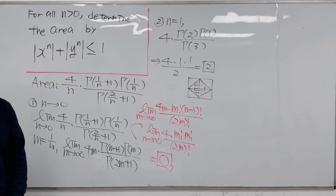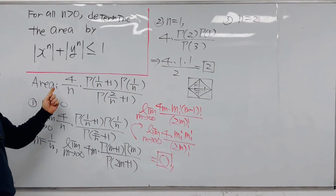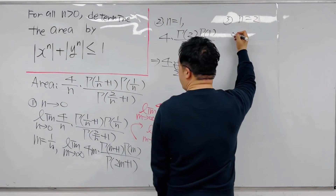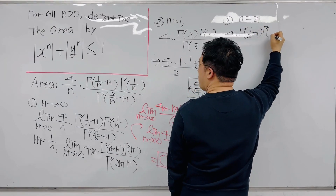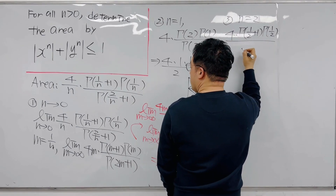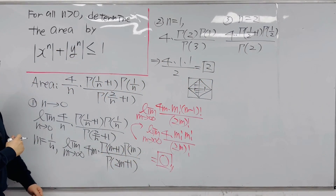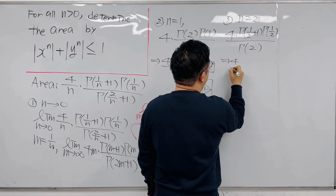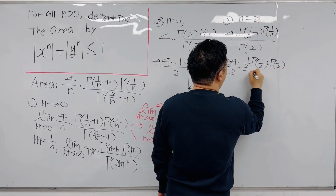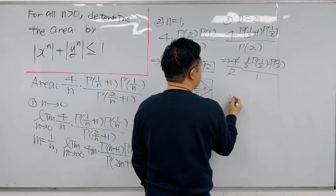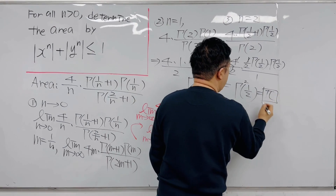Third case: when n = 2. The area is 4 times Γ(1/2 + 1) × Γ(1/2) / Γ(2). This simplifies to (4/2) × (1/2) × Γ(1/2) / 1, and we end up with [Γ(1/2)]² = π. This is the unit circle, with area π.